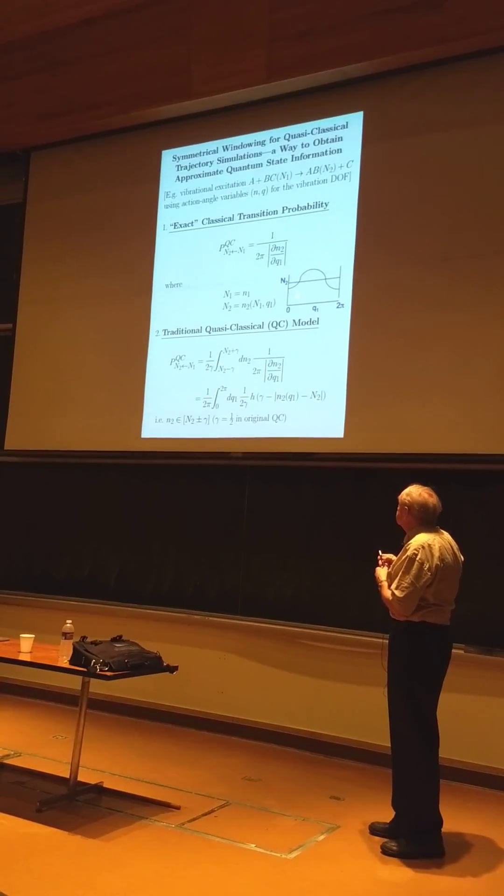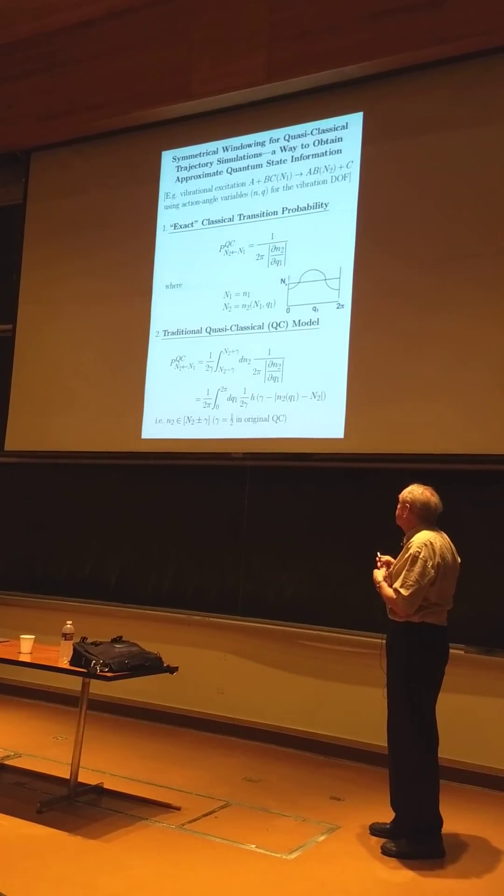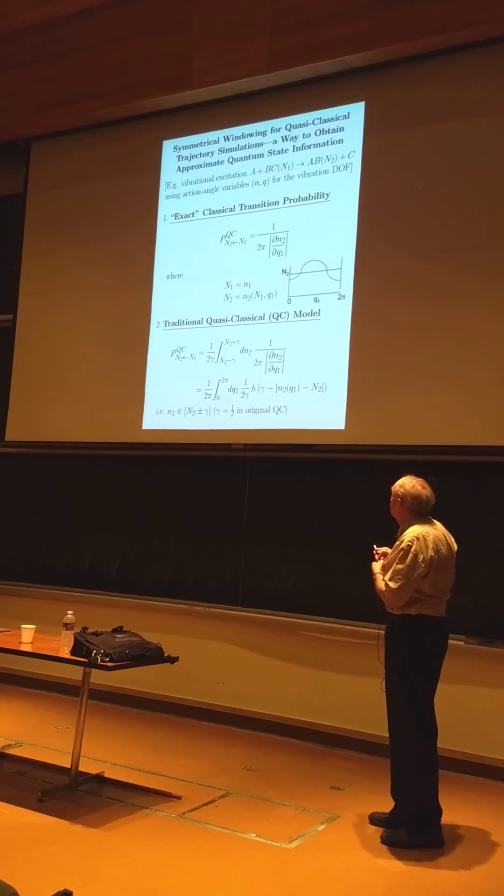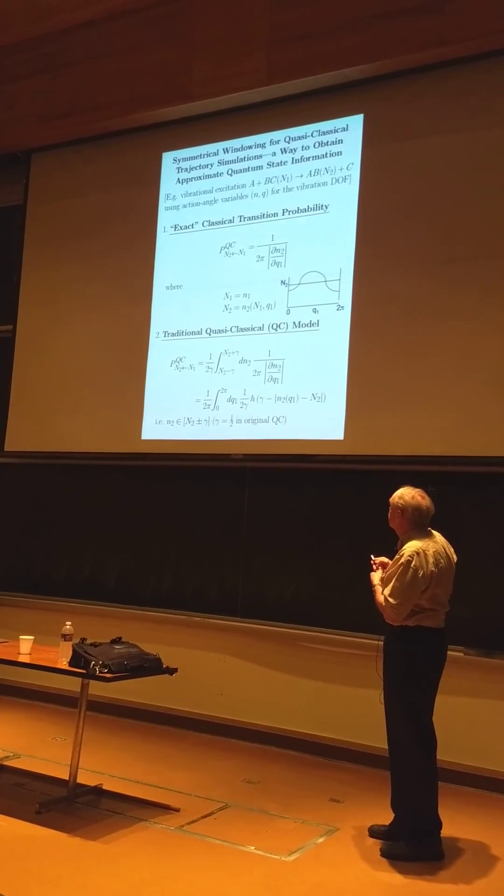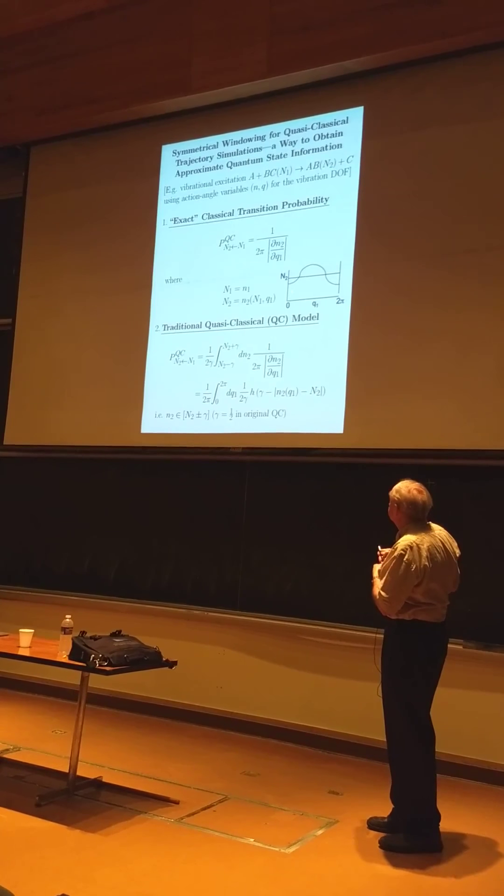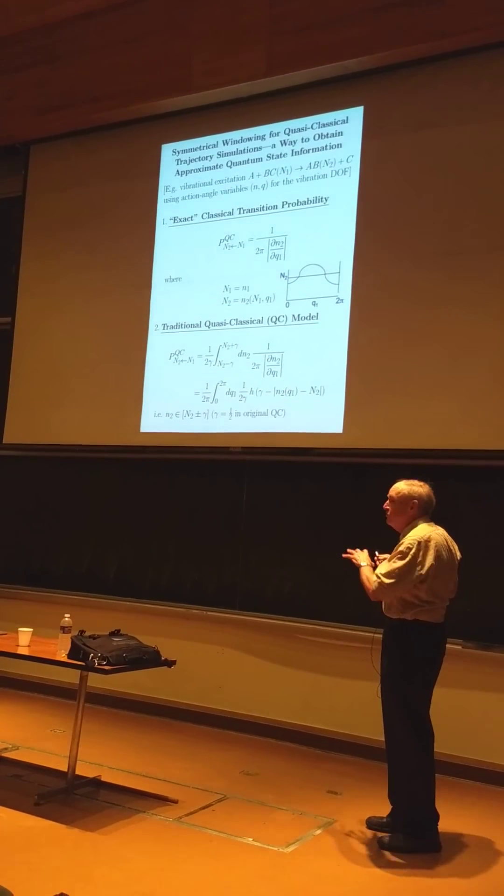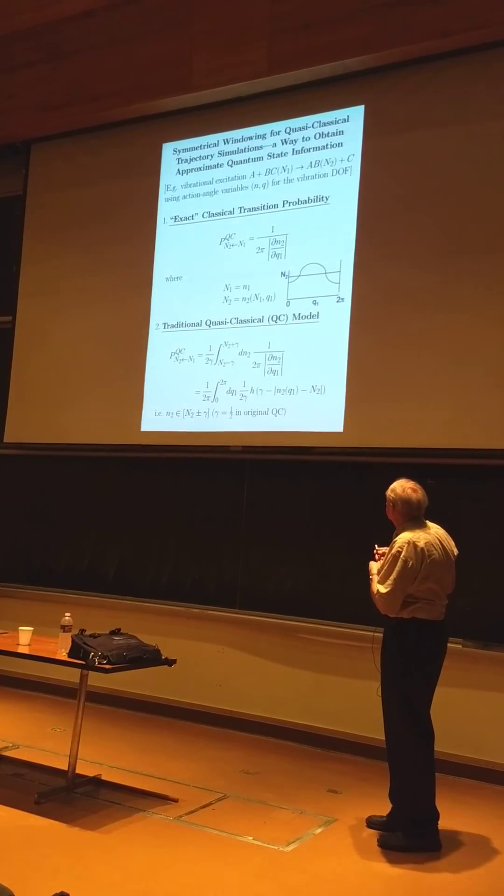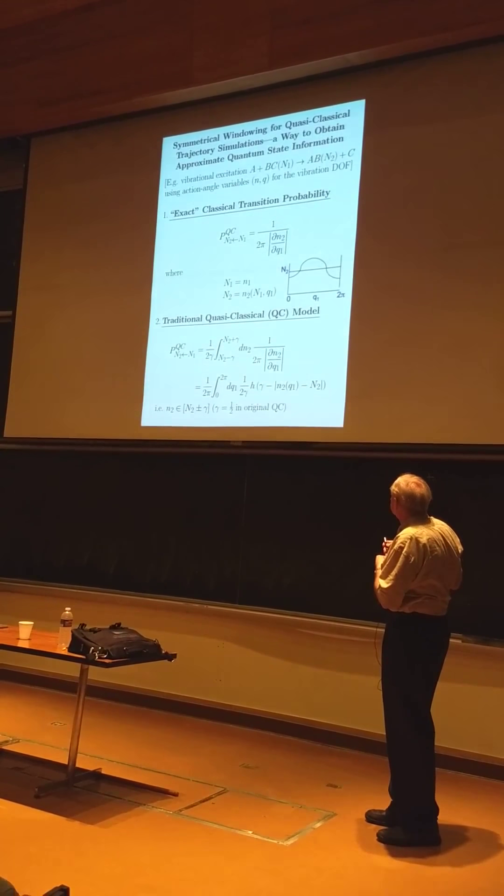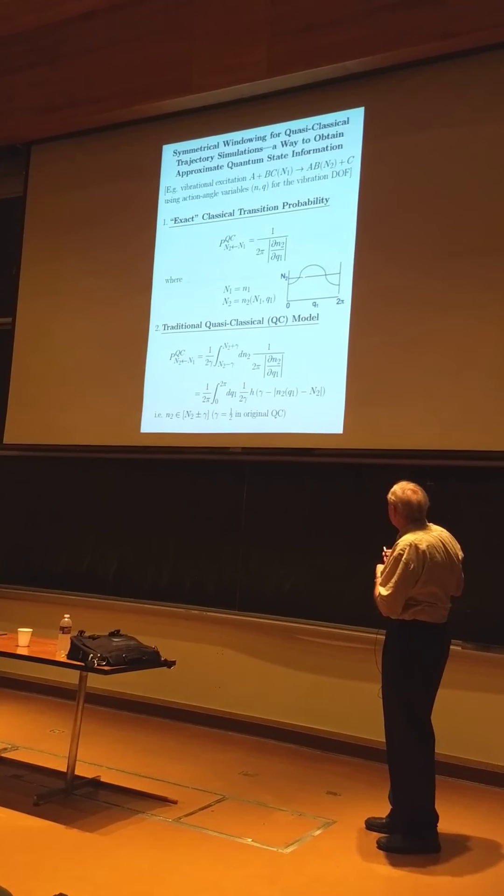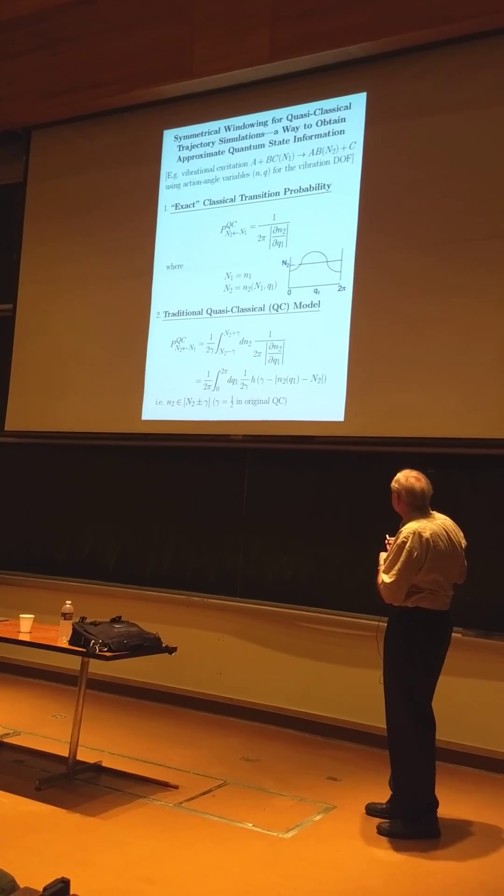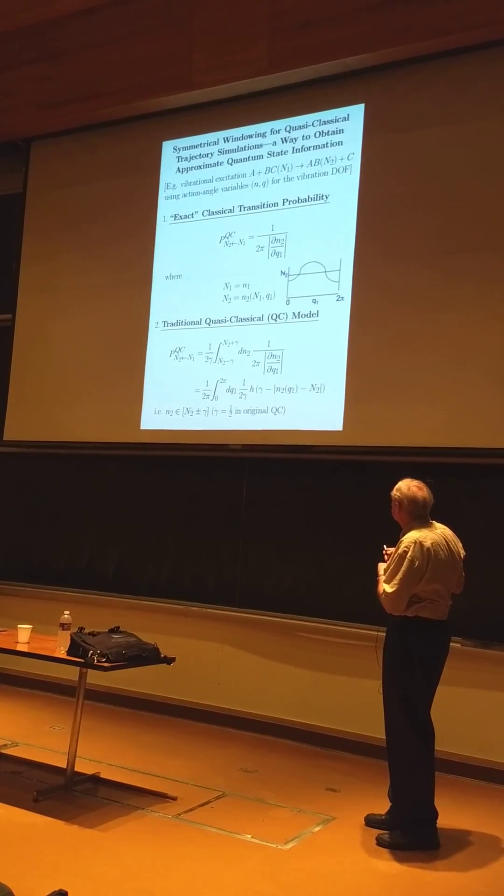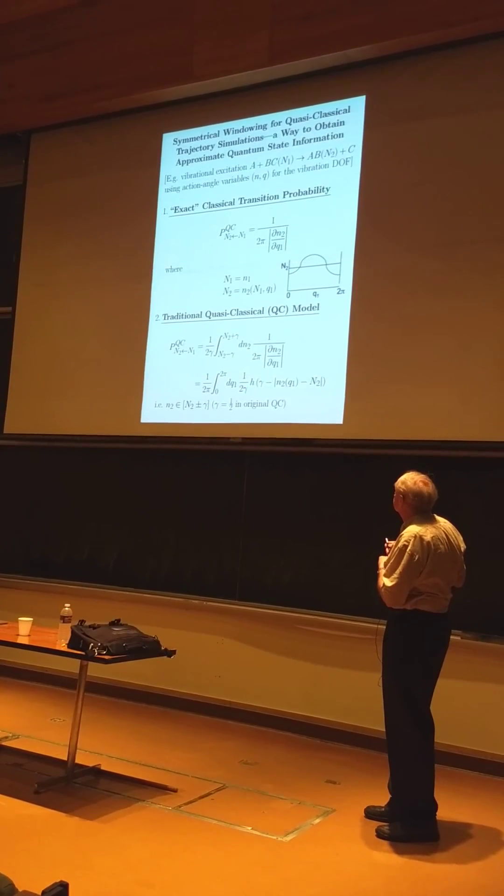And in the old days, we did it by a very primitive something called the shooting method. You start with the initial integer. That's easy. You choose many different initial angles, and then run many trajectories. And you plot the final action versus the initial angle. And then you pick out the initial angles for which the final action is exactly the integer and the final state you're interested in. In this case, that would be 2.